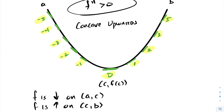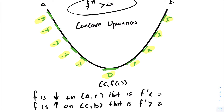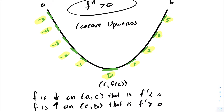Again, this is not to be confused with your first derivative. Your function is decreasing from a to c and increasing from c to b. That is, your first derivative will be less than zero on the interval from a to c, and your first derivative will be greater than zero on the interval from c to b.